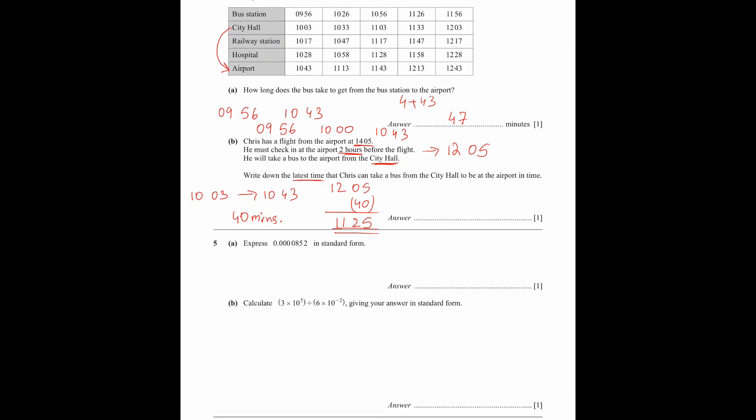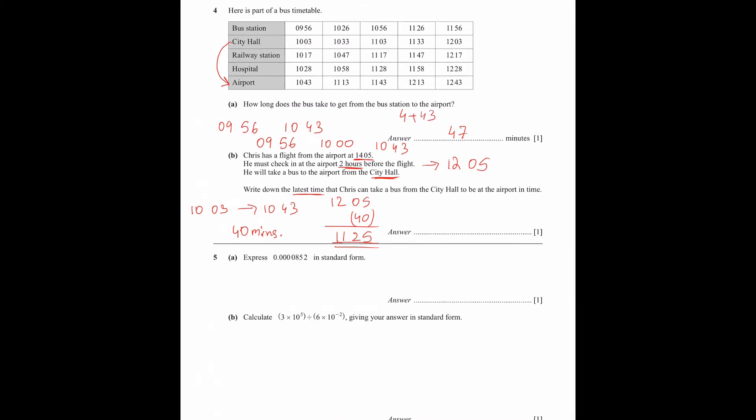11:25 is basically the time when Chris should leave from the city hall. So what do we do? Can we take the 10:03 bus? Absolutely. But what is the condition? Which bus can he take to reach the airport just in time before 12:05? 10:03 bus can take but it's not latest. 10:33, 11:03 buses can be taken. But because he should be on the bus by 11:25, the latest bus is 11:03.